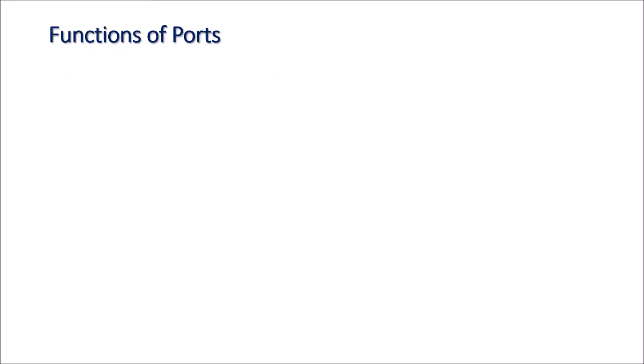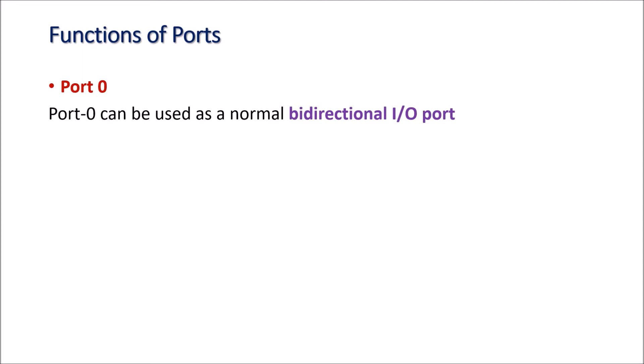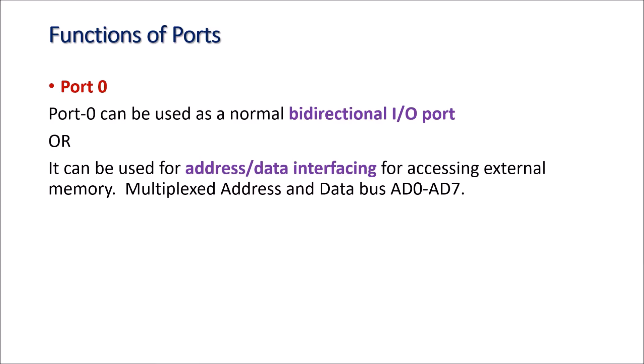The 8051 has four ports and each port is 8 bits wide. Port 0 can be used as a normal bidirectional input-output port, meaning we can connect input or output devices to port 0 pins. Alternatively, it can be used as a multiplexed address and data bus for connecting external data and address memory, named AD0 to AD7 — that is, A0 to A7 (lower 8 bits of address bus) and D0 to D7 (lower data bus) are multiplexed on port 0 terminals.